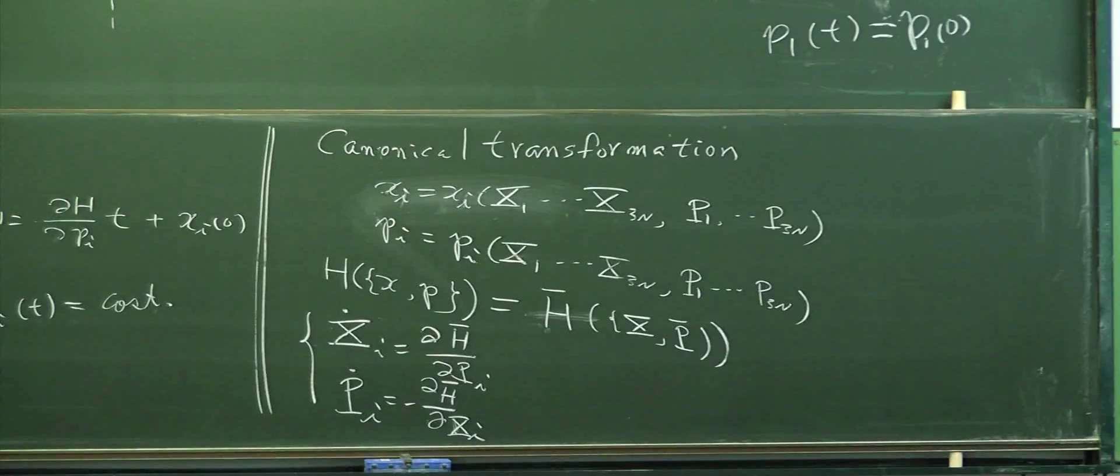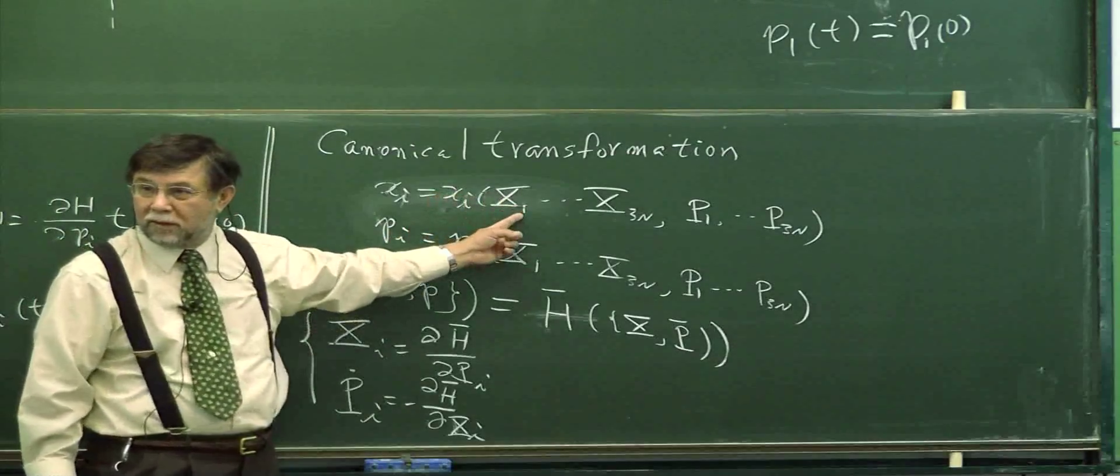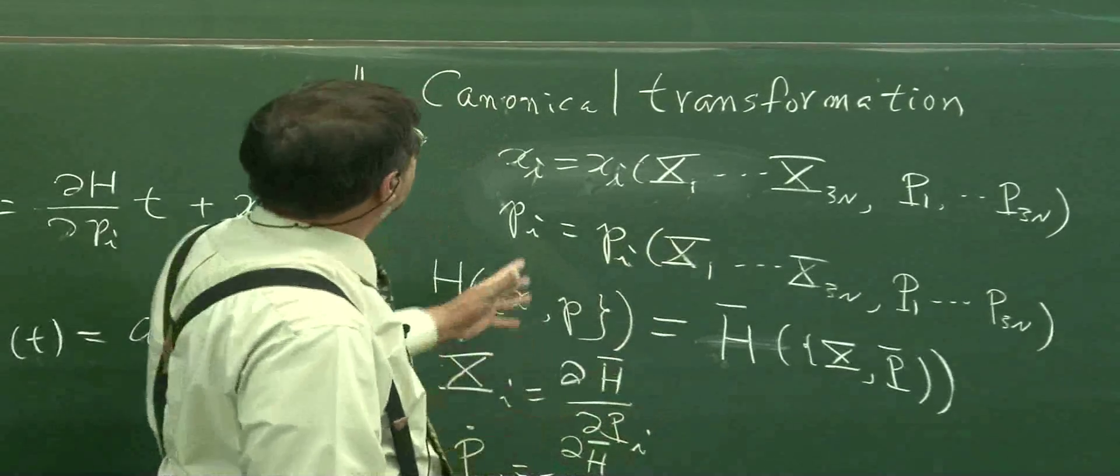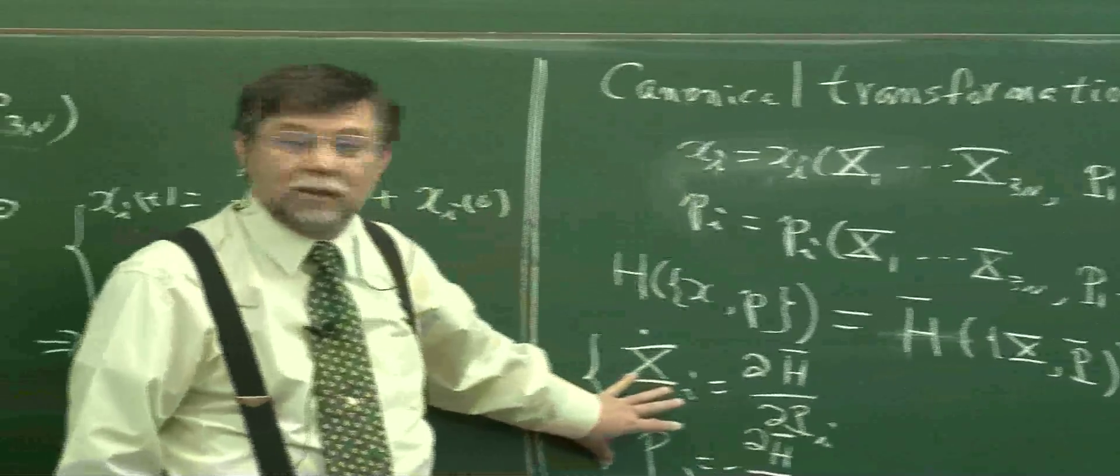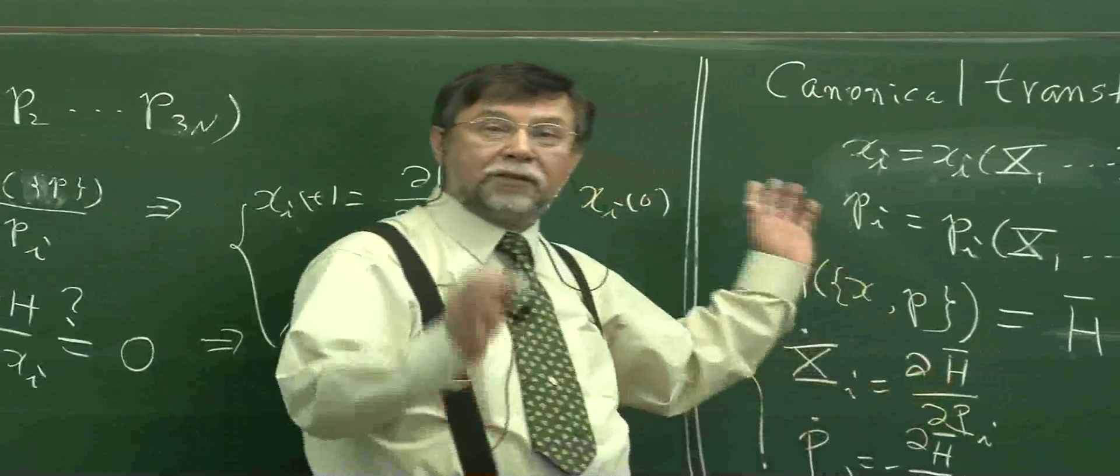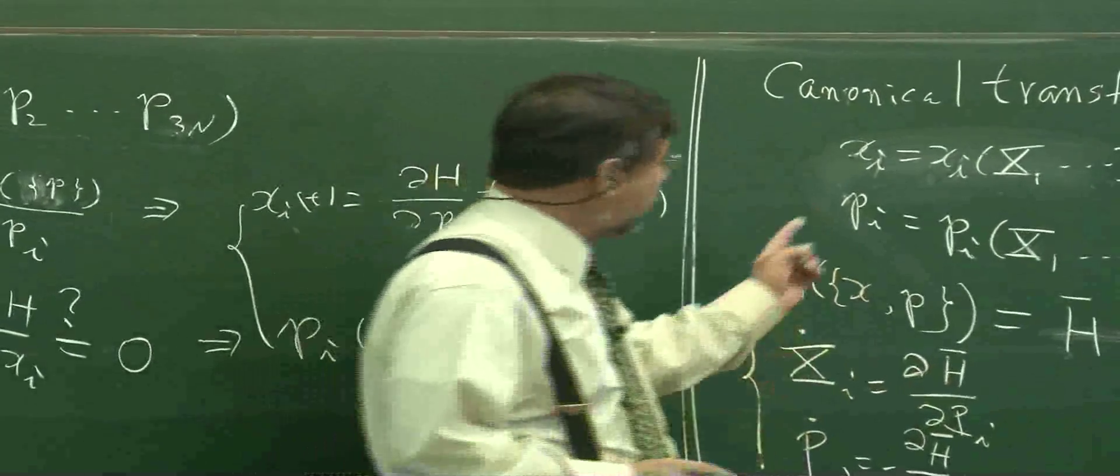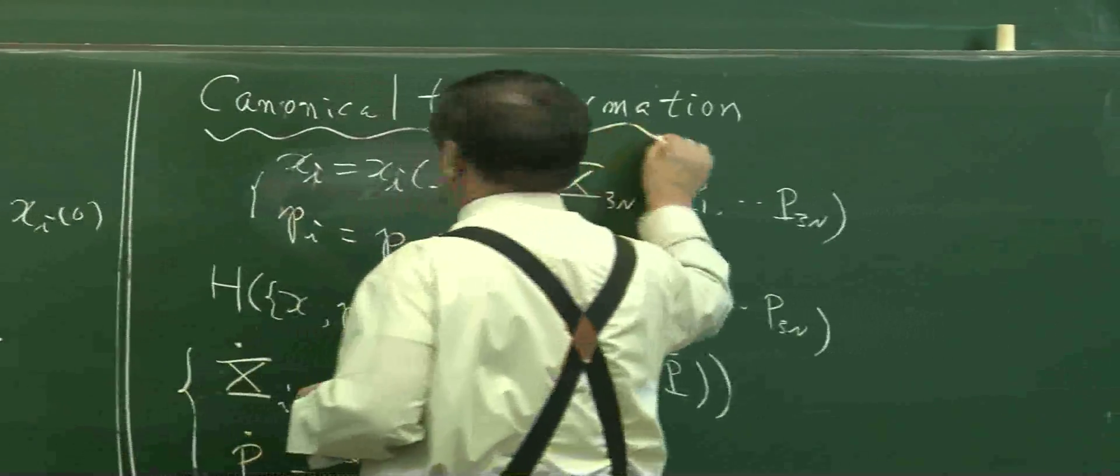This is not a general case. But if you carefully choose some function form, actually you can get exactly the same set of equations, but with a different function. If this happens, this transformation is called canonical transformation.